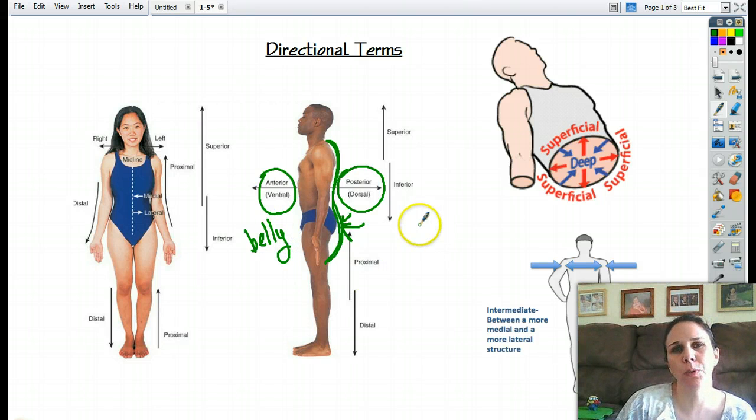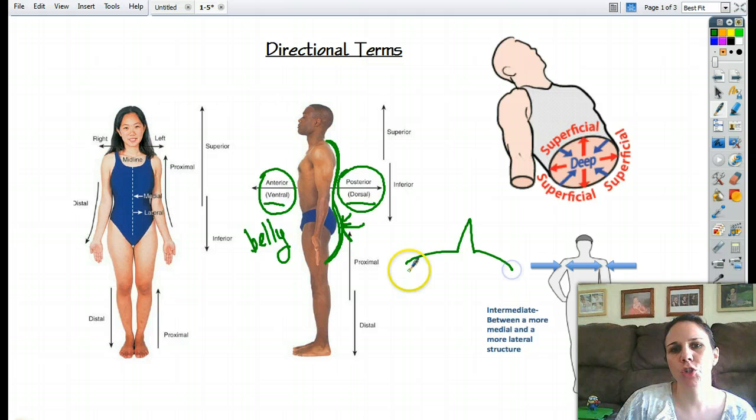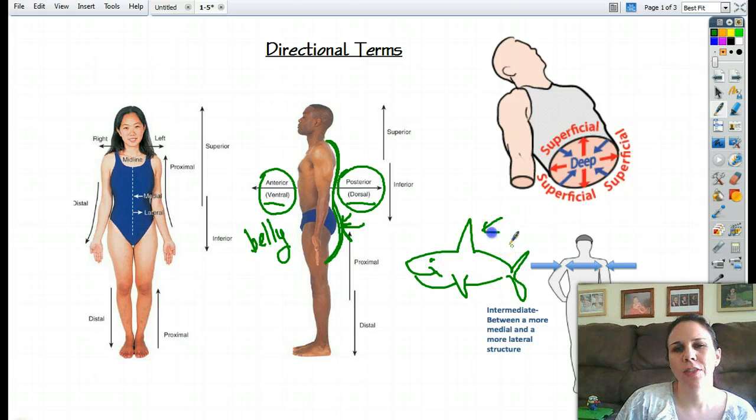Another way or another term that we can use for this is ventral and dorsal. So you know on a shark or a dolphin or no, it's a shark. Okay. That fin right there, what is that called? It's called a dorsal fin. Why? Because it's on his dorsum or his back. It is posterior to him.